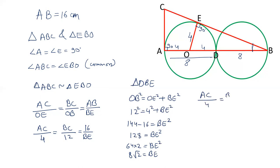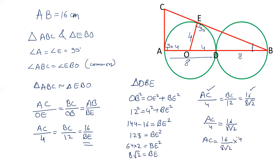Using the similarity ratio: AC/4 = BC/12 = 16/(8√2). Taking the first and last terms, AC/4 = 16/(8√2). By cross multiplication, AC = (16 × 4)/(8√2) = 8/√2. Multiplying numerator and denominator by √2 gives 8√2/2, which equals 4√2. The value of AC is 4√2 centimeters.